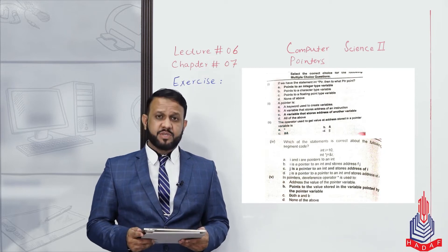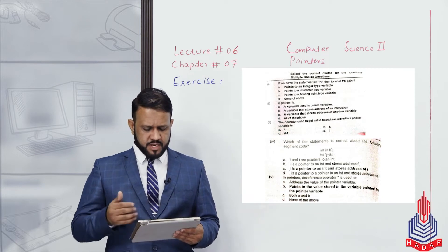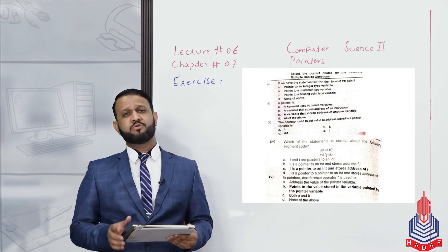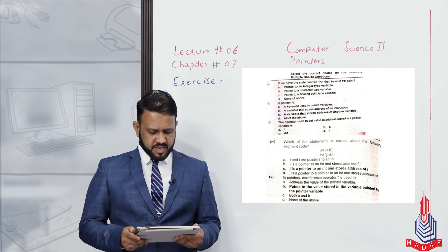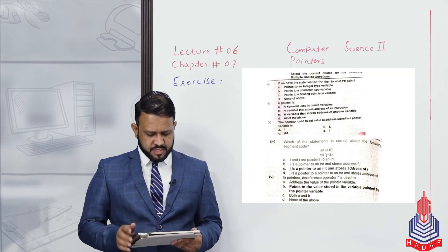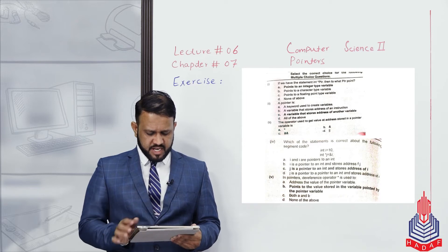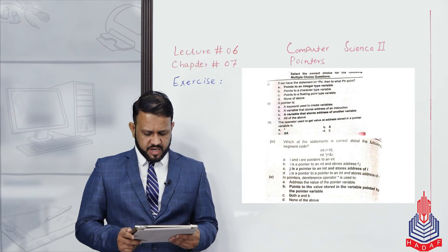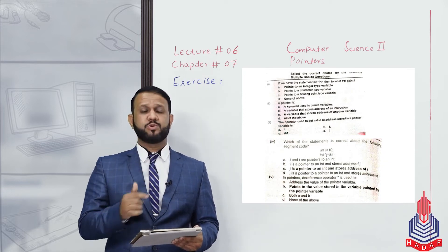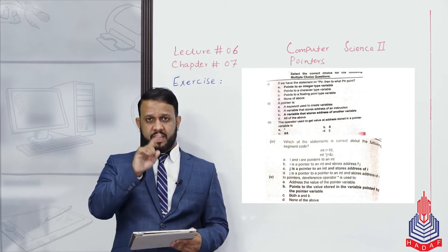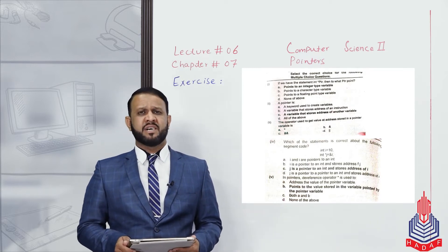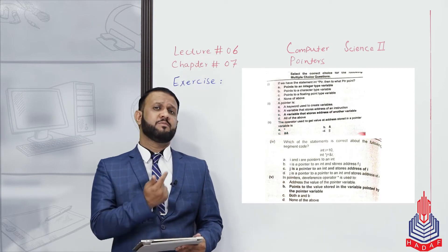The second true/false statement asks whether certain lines of code assign the value of variable temp to a pointer variable. We have a float type variable and a pointer. This statement is false, because to assign the address of a variable to a pointer, we must use the address-of operator. The asterisk or star operator is the dereference operator used to access the value at the address.